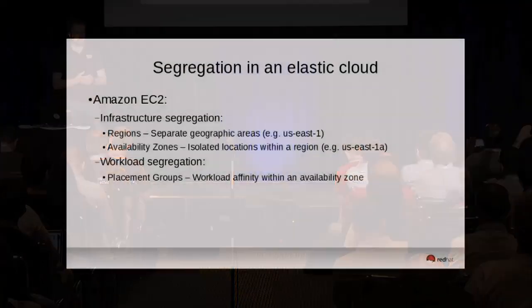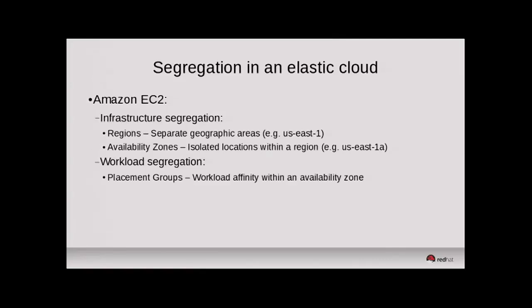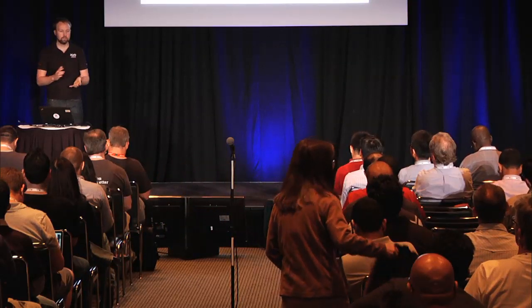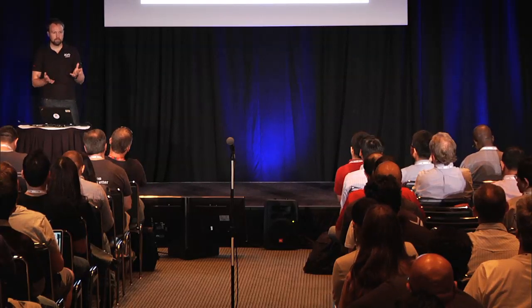Talking about the elastic cloud, I'd like to contrast a little bit to EC2. EC2 has some concepts for segregating compute resources, both in terms of exposing their failure domains to the user and allowing the user to do some affinity for workloads. In terms of infrastructure segregation, they have regions which are geographically dispersed and completely separate from one another. Where it gets confusing is that in OpenStack, we also have a concept of regions. Similarly with availability zones, which exist in EC2, we overload the terminology.